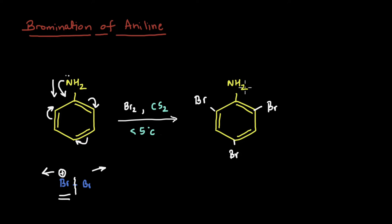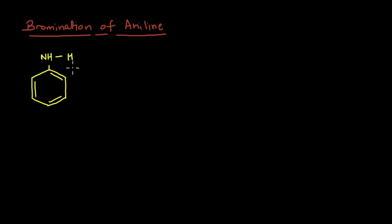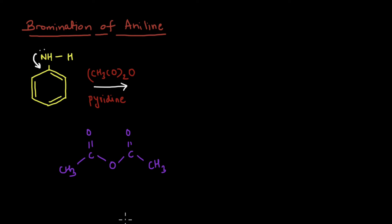That means we need to rethink our approach. Somehow, if we are able to engage this lone pair, then maybe we can get only monobromo substitution. What we want to do is somehow block this nitrogen and make it less reactive, so that it does not share the lone pair fully with the ring. One way to do that would be to react it with acetic anhydride.